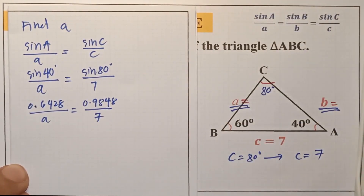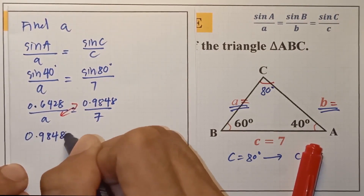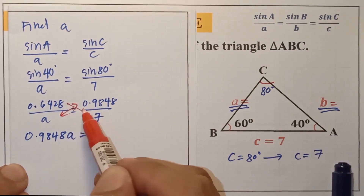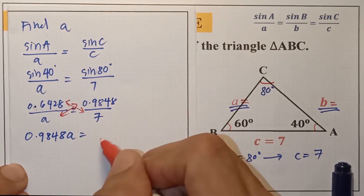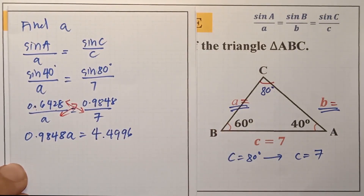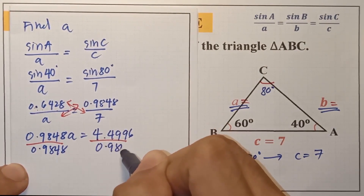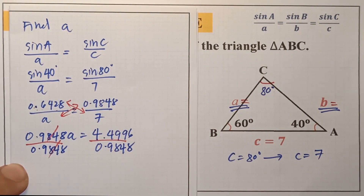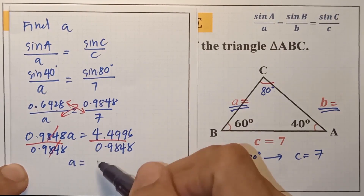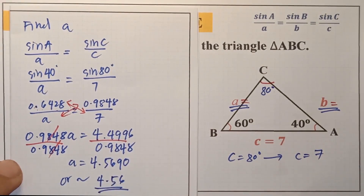We cross-multiply: 0.9848a equals 0.6428 times 7, which gives 4.4996. We use four decimal places throughout, though the final answer can be two or four decimal places. Dividing both sides by 0.9848, we get a equals 4.4996 divided by 0.9848, which gives a equals 4.5690, or approximately 4.56.